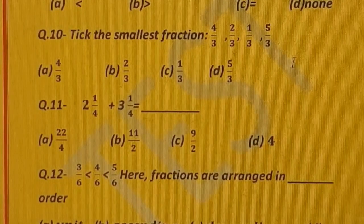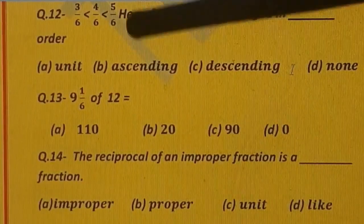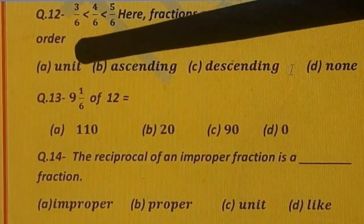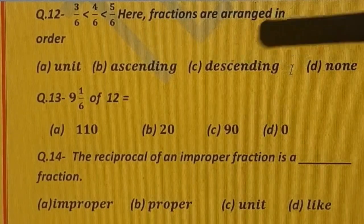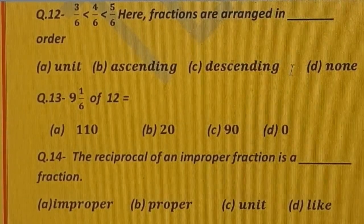Question number 12. 3 upon 6 is less than 4 upon 6 and 4 upon 6 is less than 5 upon 6. Here fractions are arranged in dash order. Options are: A) unit, B) ascending, C) descending, and D) none.